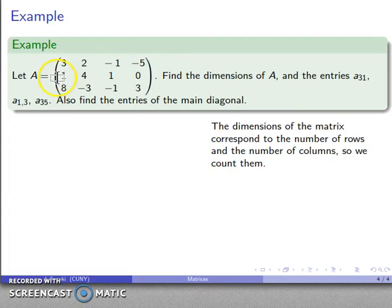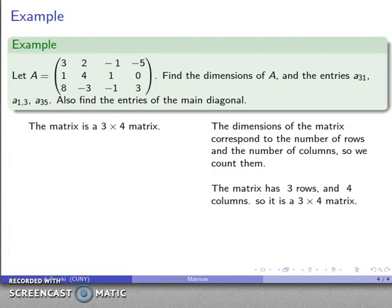So this matrix has one, two, three horizontal rows and one, two, three, four vertical columns. So this is a three by four matrix. Again remember, row always goes first, column always goes second.